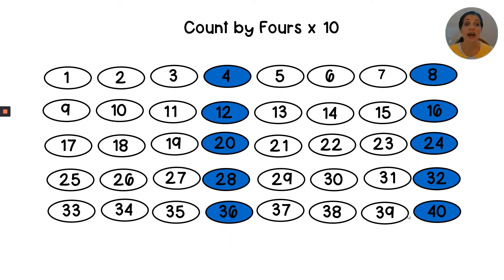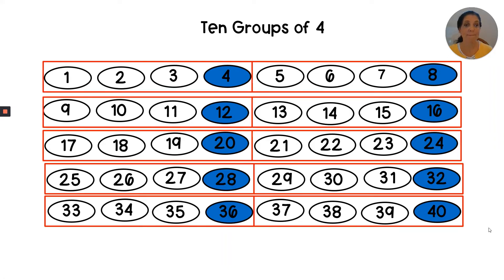We can count by fours ten times to find how many in all: 4, 8, 12, 16, 20, 24, 28, 32, 36, 40. We can put the array in groups of four — ten groups of four.